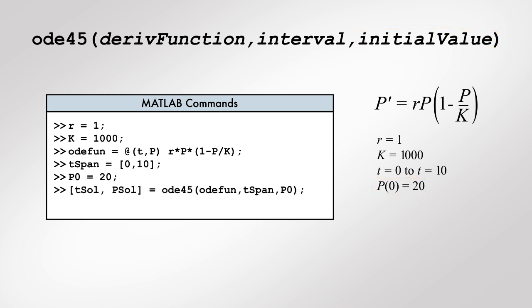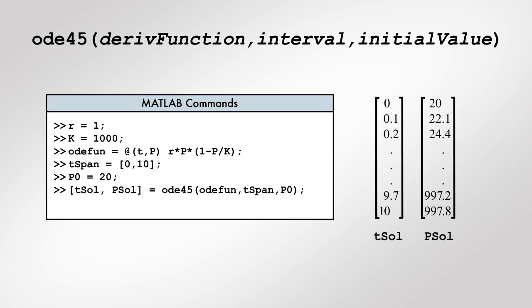Now we call the ODE45 function to obtain the numerical solution for the population P. The two outputs, T sol and P sol, are a vector of values representing time points and the corresponding population size at those times.